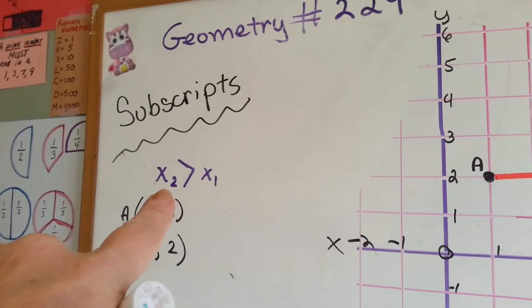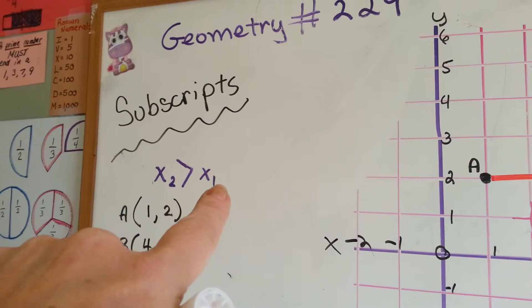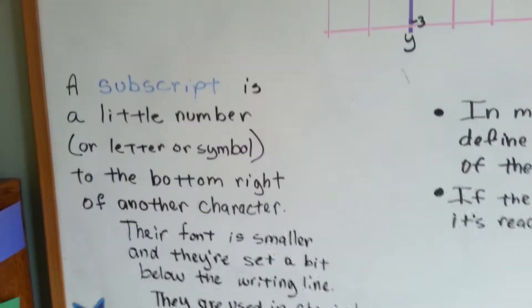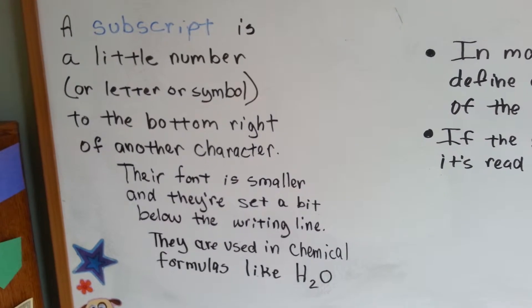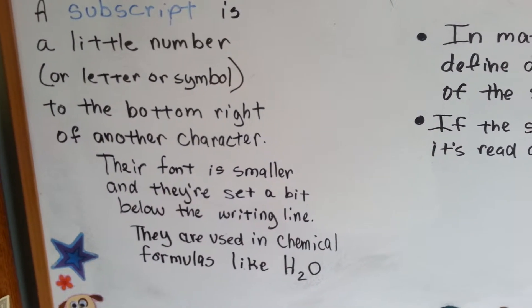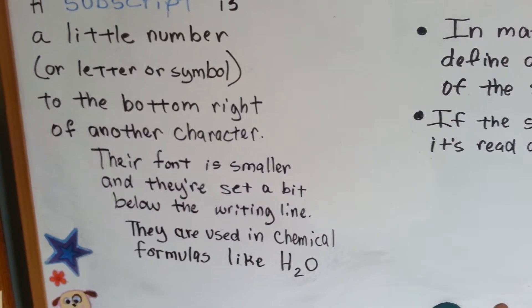Subscripts are the tiny little numbers that are down here, see? A subscript is a little number or letter or symbol to the bottom right of another character. Their font is smaller and they're set a bit below the writing line.